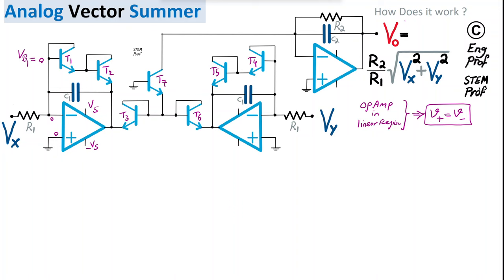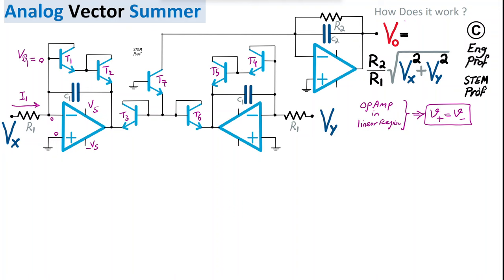Voltage Vx drops across resistor R1 (whose other side is at virtual ground), producing current I1 through R1. This I1 flows through the base-emitter junctions of T1 and T2 in series, creating a base-emitter voltage drop defined by I1. The sum of these two VBE voltages defines the output of op-amp 1, Vout1.